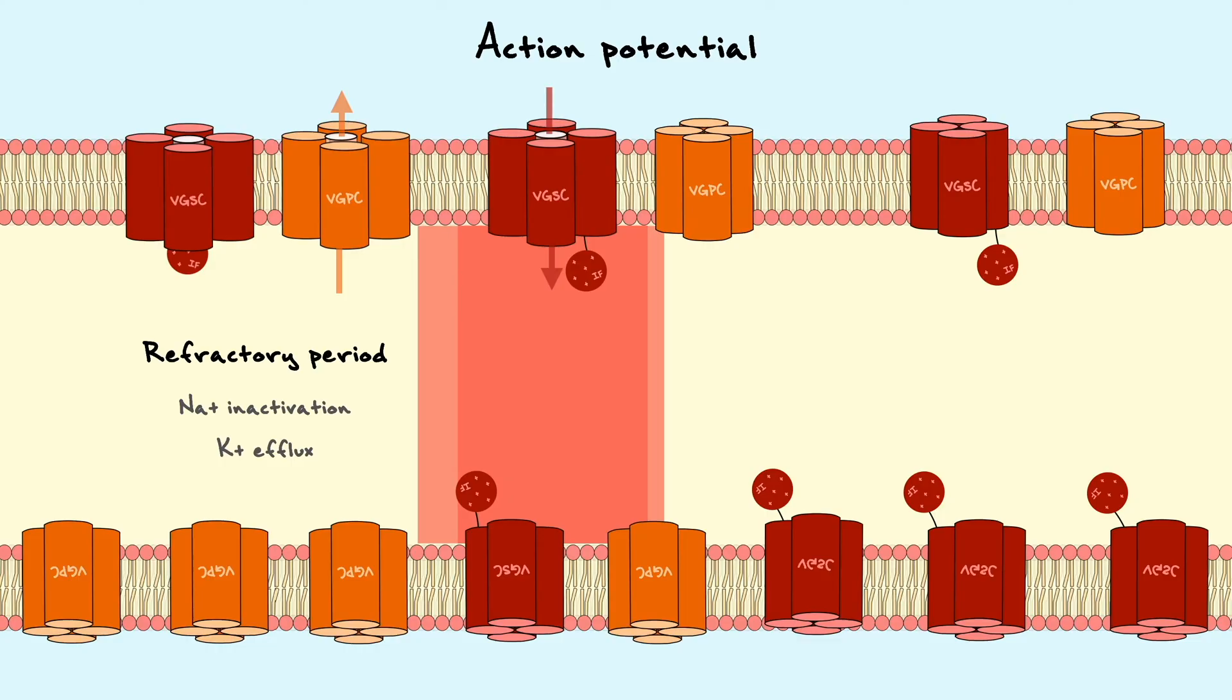During this period, the channels will not answer to any amount of depolarization until they have gone through a hyperpolarization that removes the inactivation motif from the pore. As a result, the refractory period confers directionality of the signal by preventing channels to open again and depolarize the axon in the other direction.